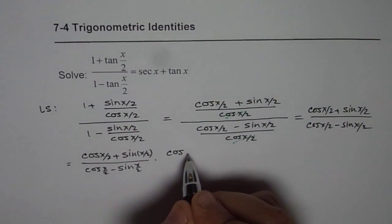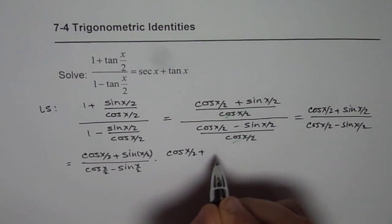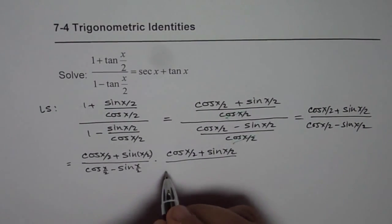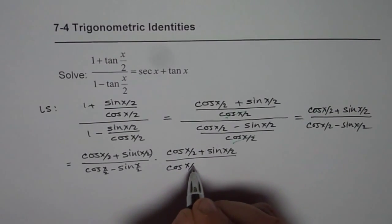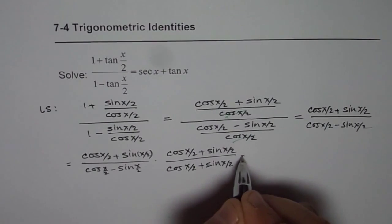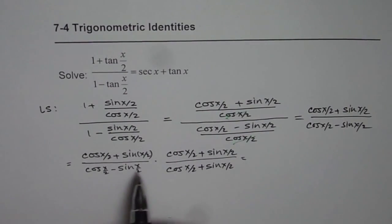We also divide by the same factor cos(x/2) + sin(x/2). When we do that, in the denominator we get a^2 - b^2.